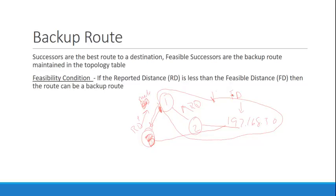Now, how do we figure out if the route through R3, even though it doesn't have the best feasible distance, could be a backup route? It has to meet the feasibility condition. The feasibility condition says: if the reported distance is less than the feasible distance, then the route can be a backup route. In our example, the reported distance from R2 and R3 to R1 is the same. So this route can become a backup route because its reported distance will be less than the total feasible distance — what changed was the local bandwidth, not the reported distance.